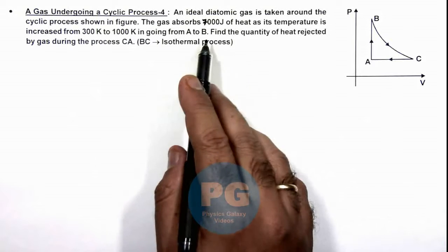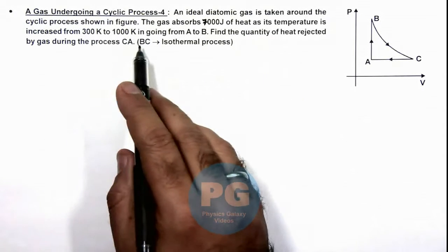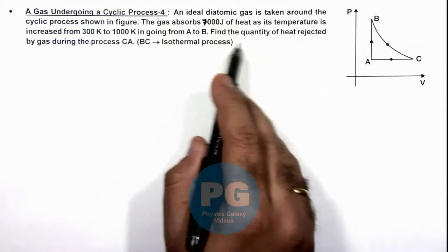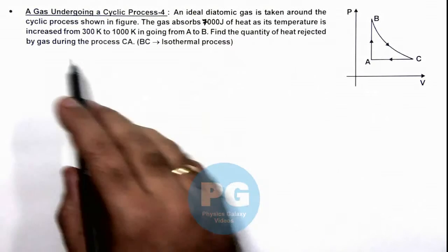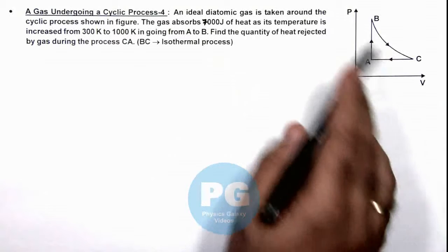The gas absorbs 7000 joules of heat as its temperature is increased from 300 to 1000 kelvin, going from A to B. We are required to find the quantity of heat rejected by gas during the process C to A, and we are given that process B to C is isothermal.